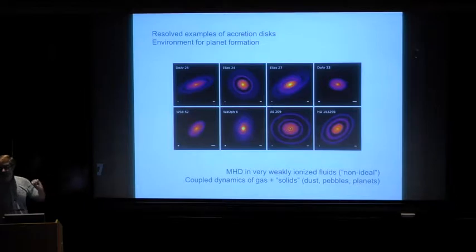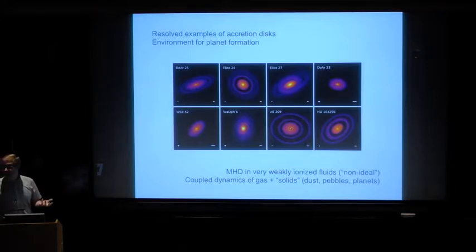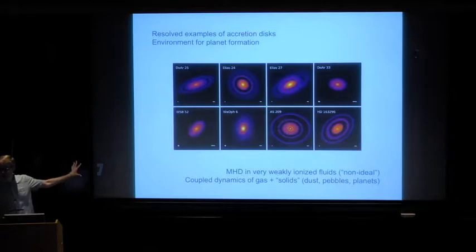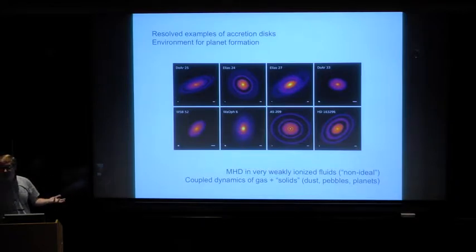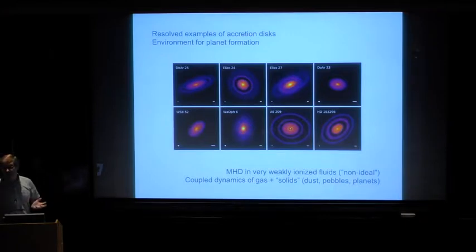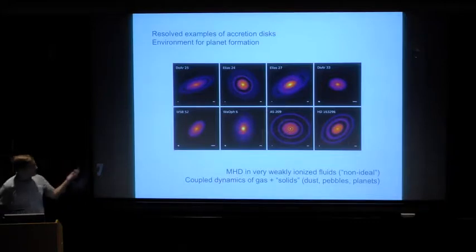From that point of view, the nice thing about these systems is that they can actually be spatially resolved — here you have eight examples of that imaging. Not only can they be spatially resolved, but if you look in molecular line emission — this is dust emission here, but you can also look in emission of molecules such as CO, HCO+, and other species — by looking at those molecular lines you can measure the velocity at each point in this image. So you can have both spatial resolution and also spectral or velocity resolution. That's a fairly unique situation in the context of accretion disks.